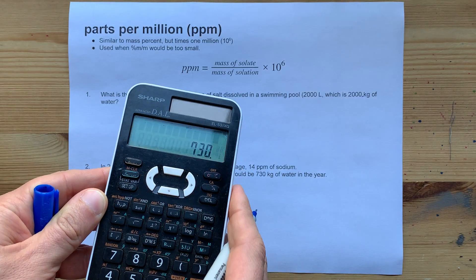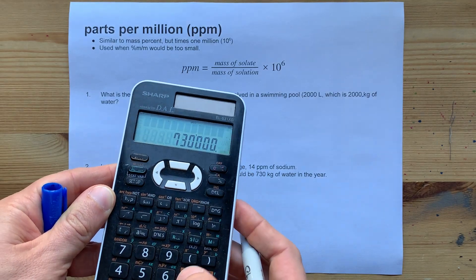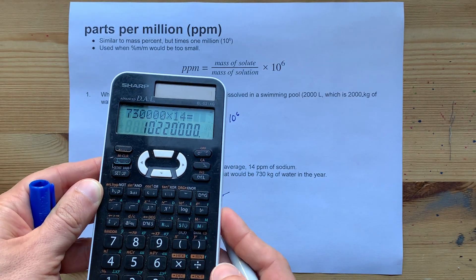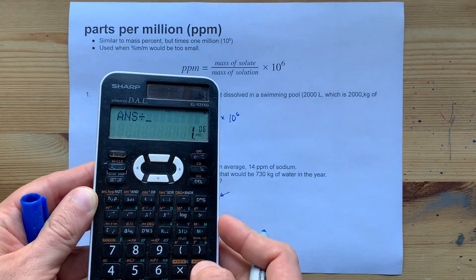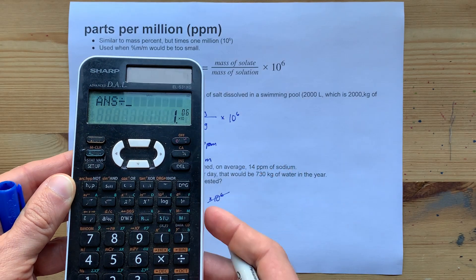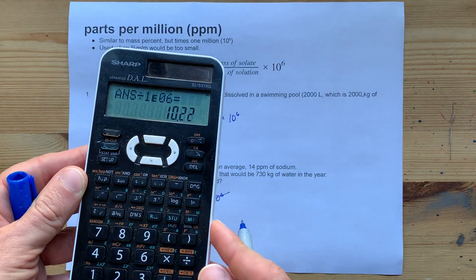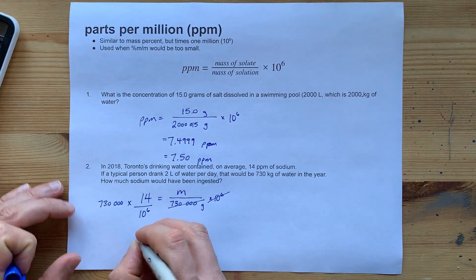We got 730,000 times 14. And then we divide it by 1 times 10 to the power of 6. That's a 1 with 6 zeros on the end. The answer ends up being 10.22.